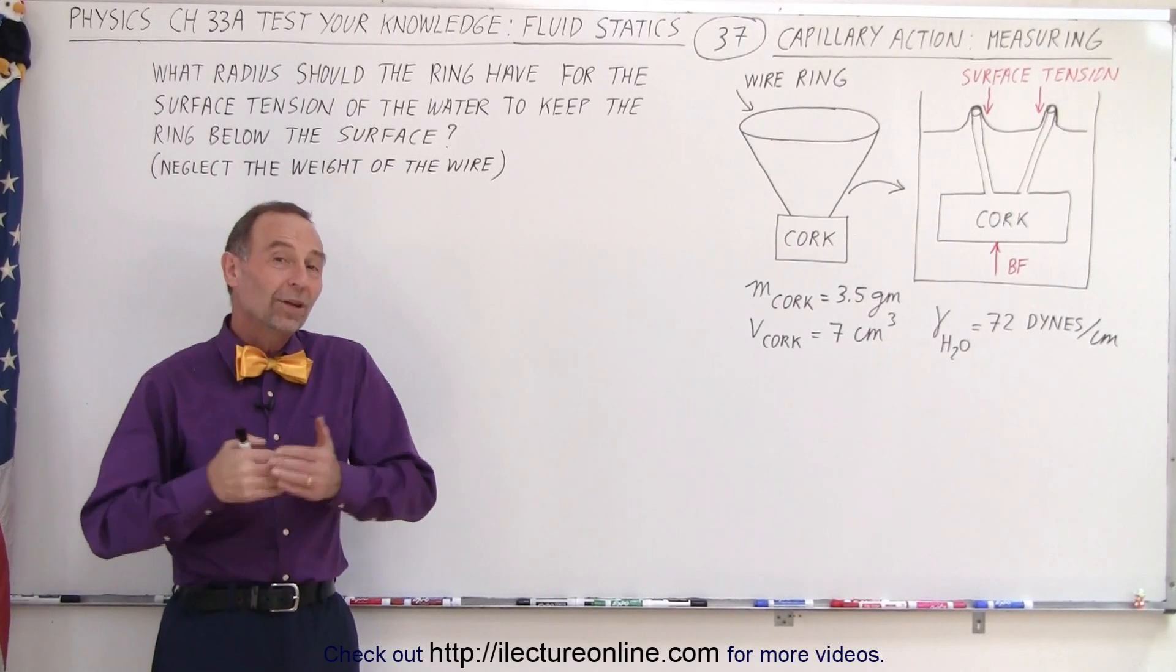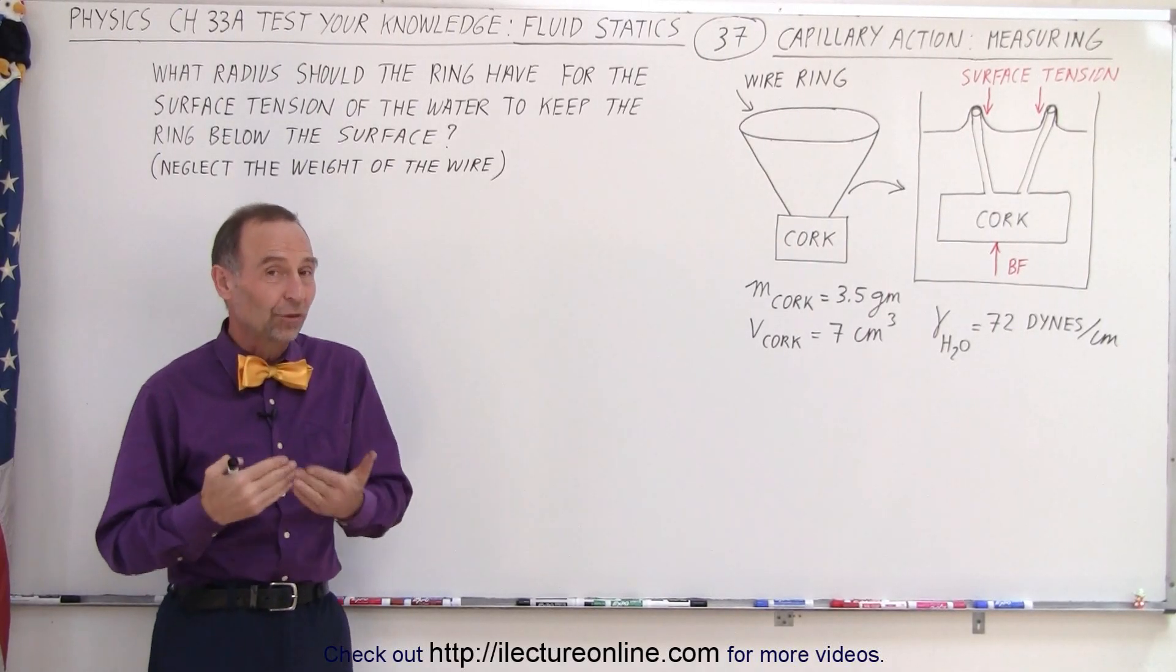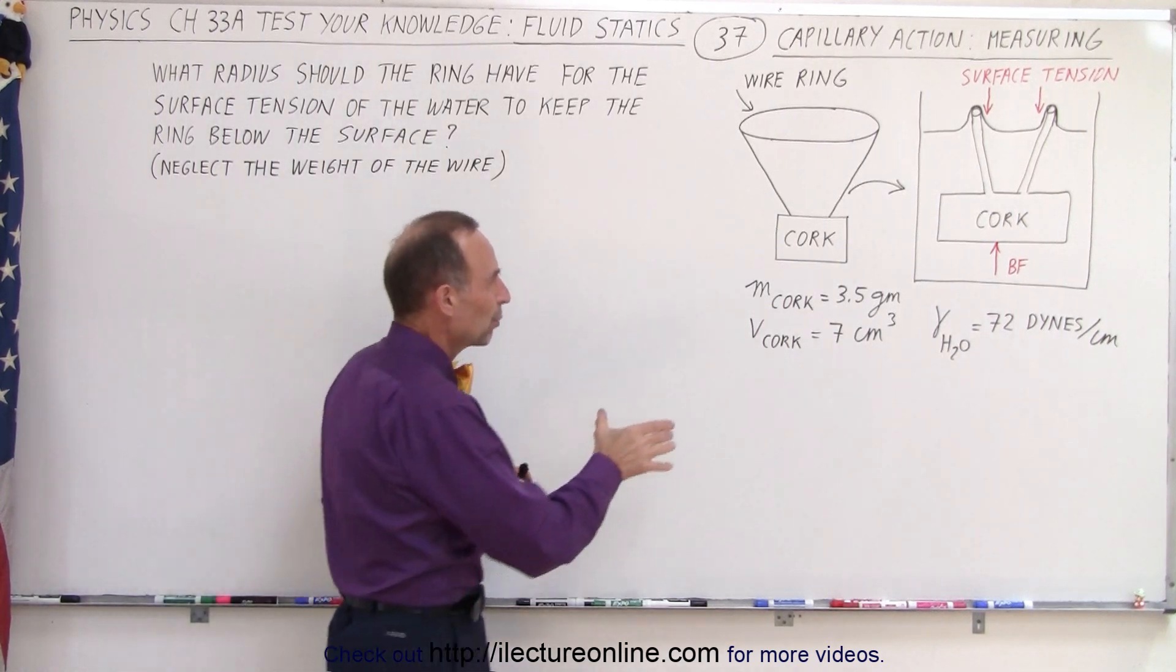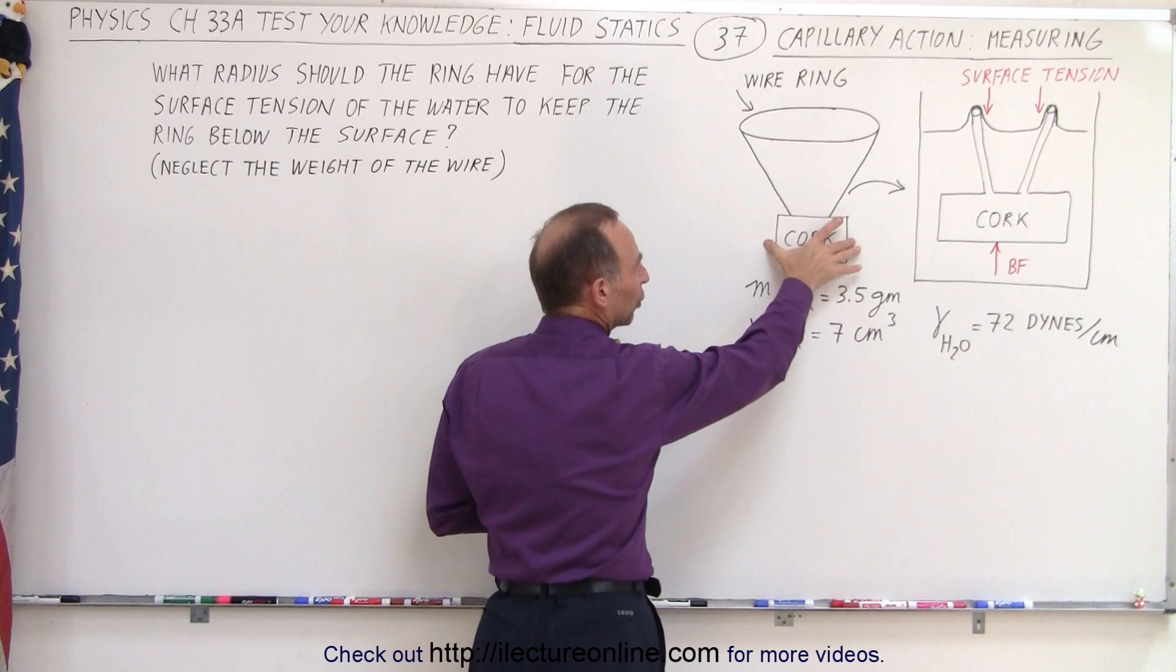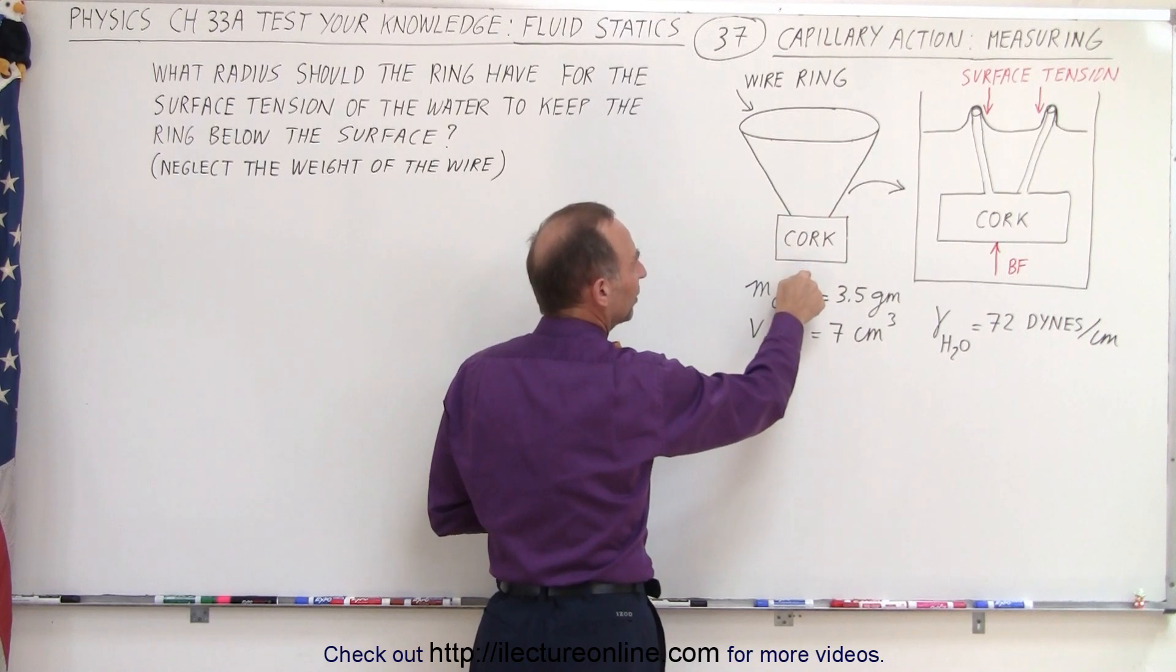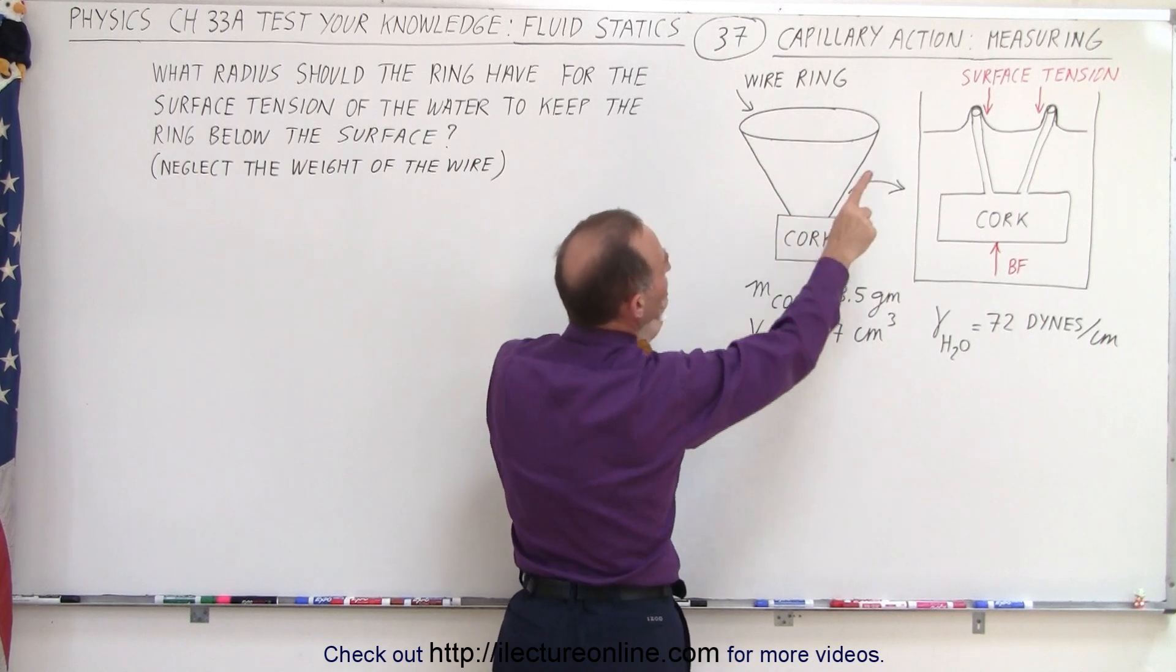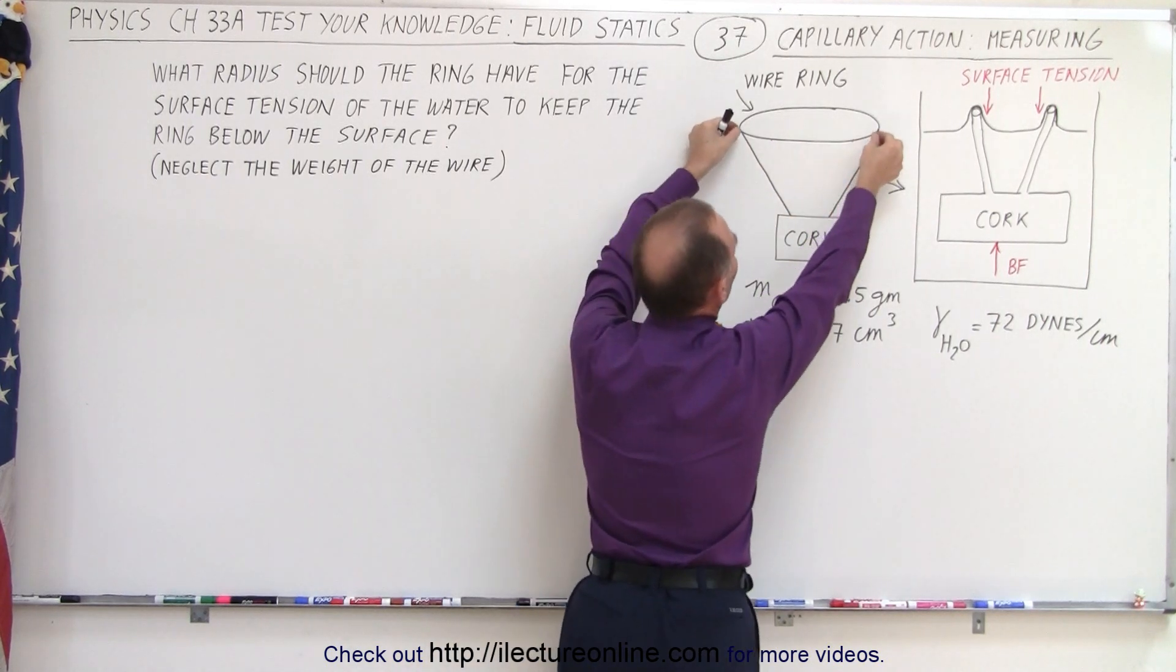Welcome to Electronline. One of the ways we can measure the surface tension of water is to build this strange contraption. We have a piece of cork - the density of the cork is less than the density of water. We attach a wire on both sides, poke it into the cork, and then build a ring that we attach to the two wires.